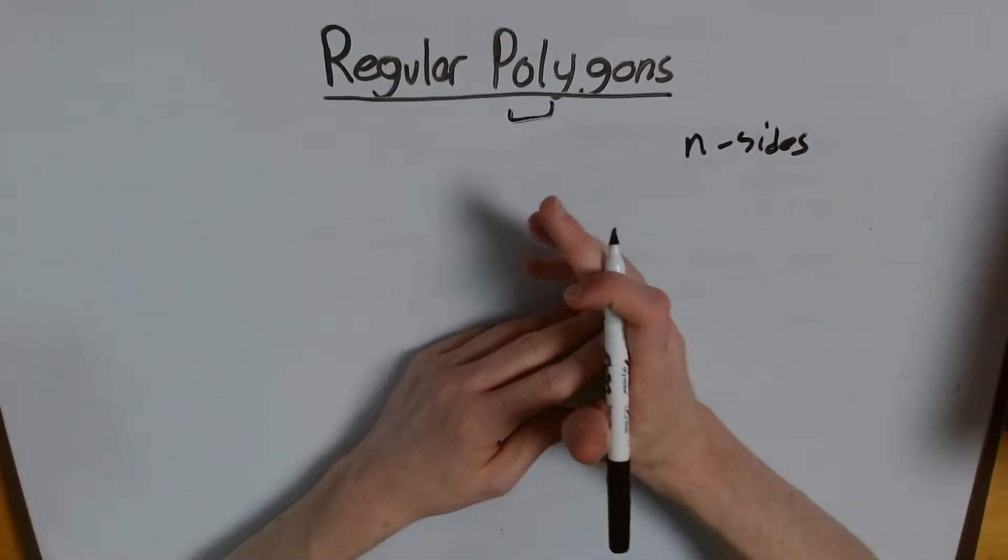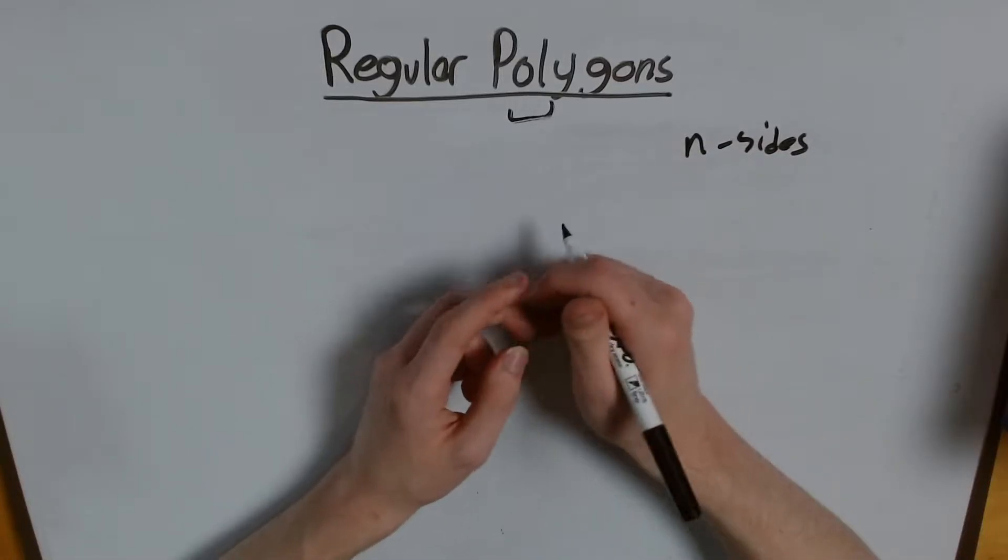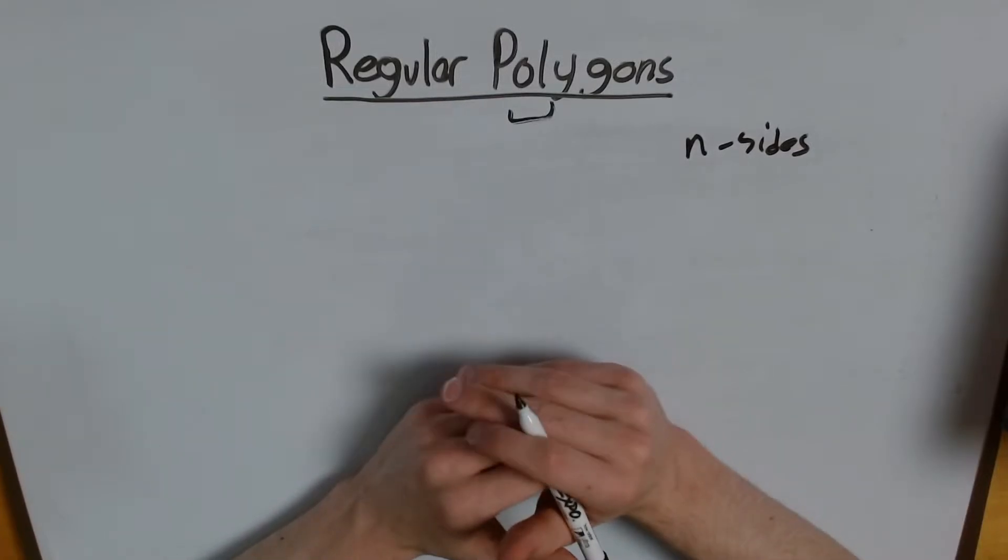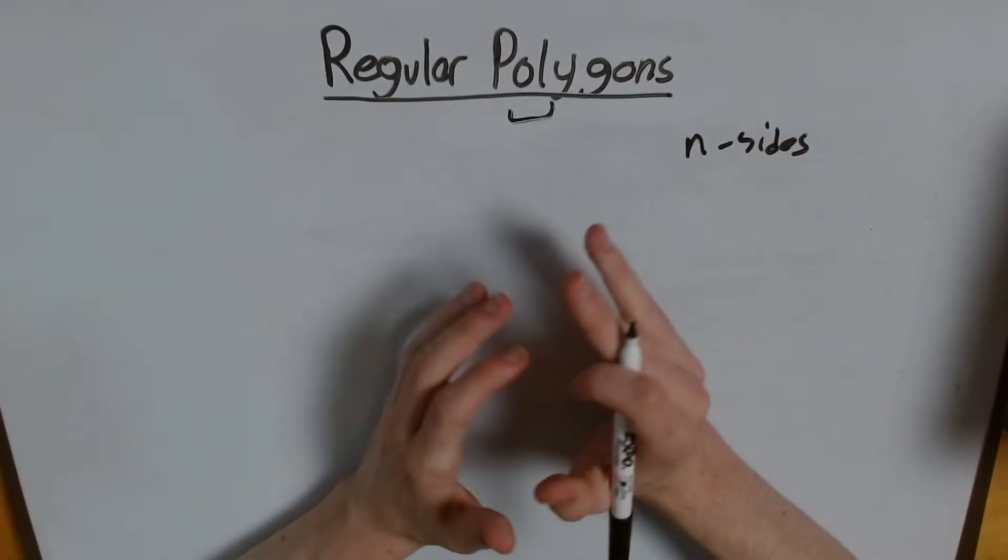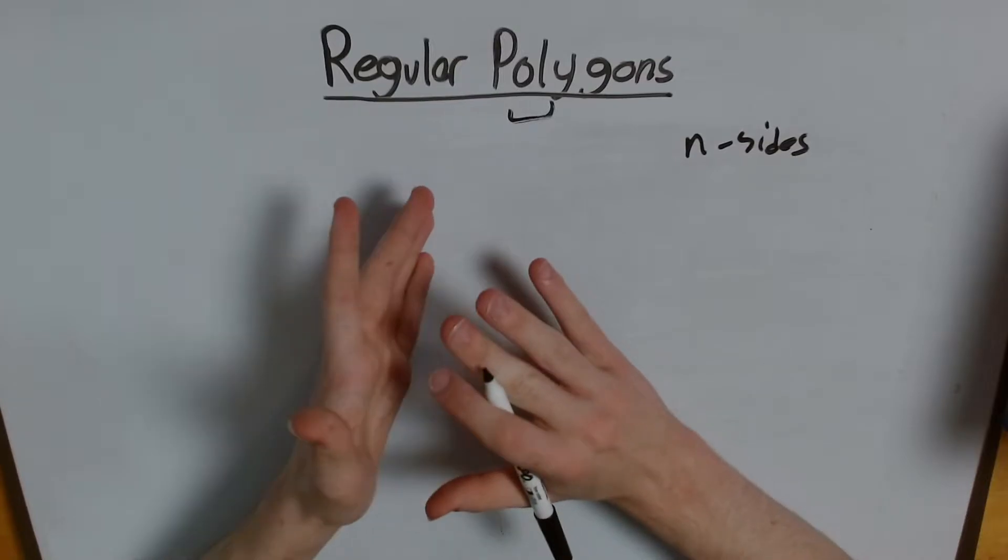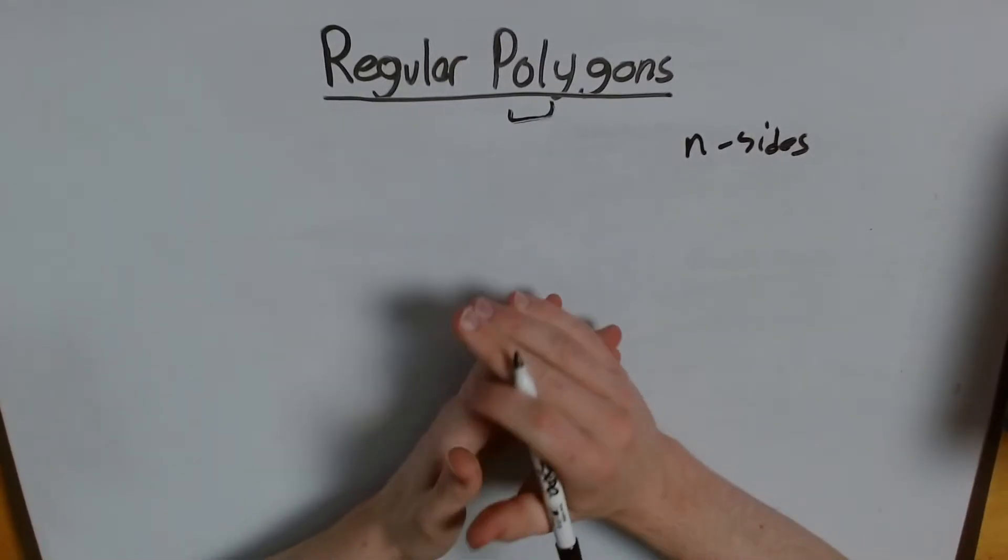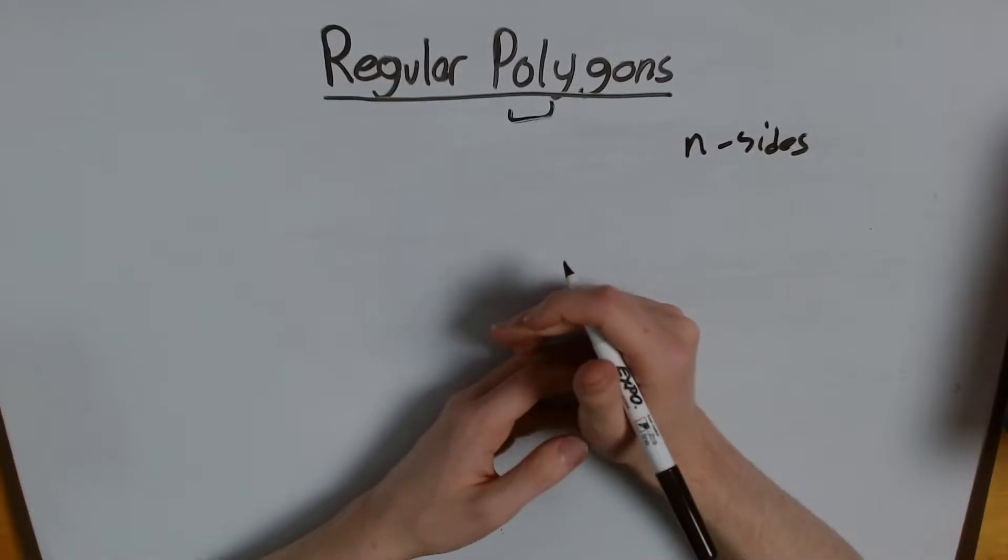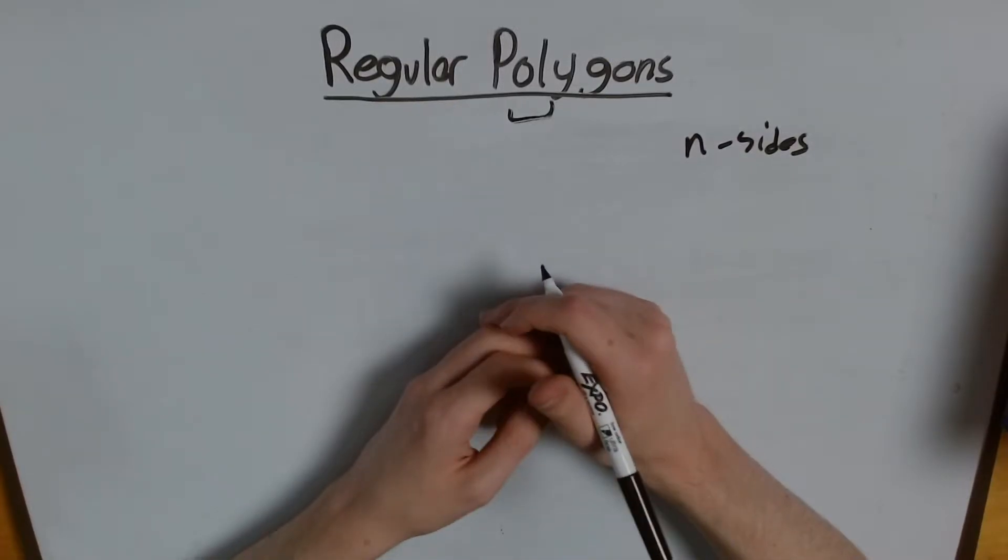So, it can have 1,000 sides, 10,000 sides, a million sides. Now, we're not going to draw a million-sided shape because that's a ton of work, but we're going to talk about properties that apply to all types of polygons, and when and how to use them. And the first thing we're going to start with is with regular polygons.